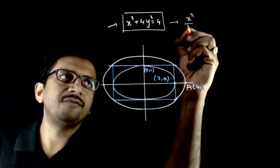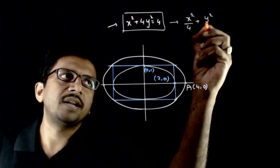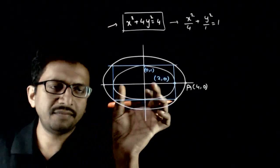That is x²/4 + y²/1 = 1. You have this ellipse.